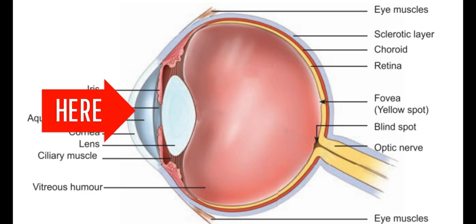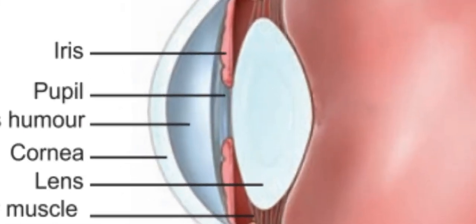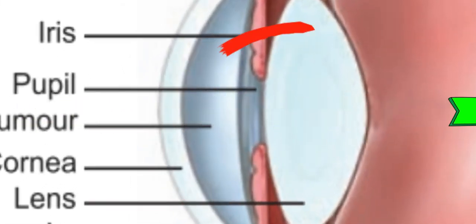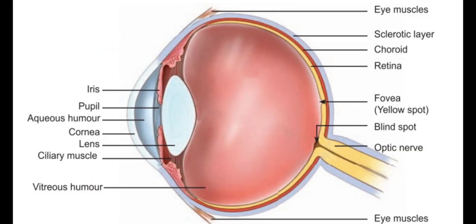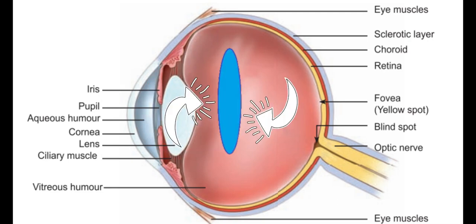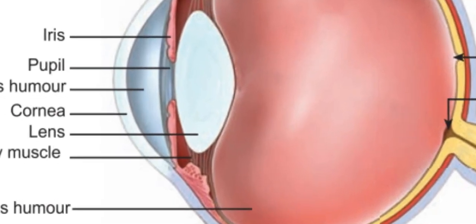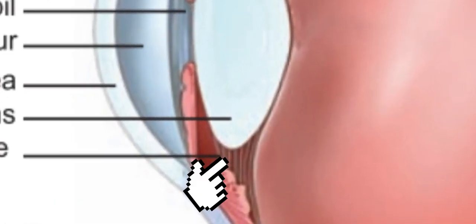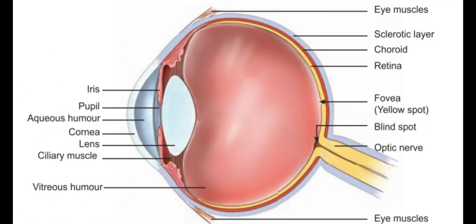Aqueous humor is a watery fluid that fills the empty space right here. Pupil is the hole right here that allows light to enter and pass through. This is the lens, just like in cameras, but this lens is a bi-convex lens - that means both sides of it are convex. This brown color part here is the ciliary muscle which changes the curvature of the lens. Whoa, no camera in the world can do that!